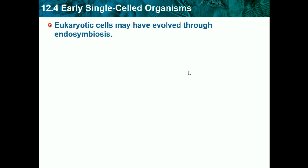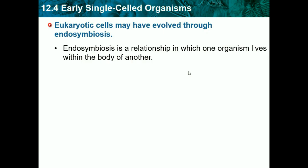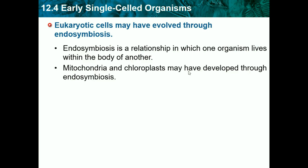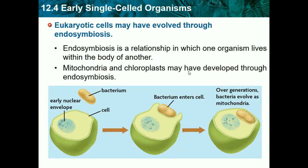Eukaryotic cells may have evolved through endosymbiosis — a relationship in which one organism lived within the body of another. Mitochondria and chloroplasts may have developed through endosymbiosis. First, a cell with an early nuclear envelope is starting to become eukaryotic. A bacteria comes and lives inside of it, and over generations that bacteria evolved to become a mitochondria. This also happened with chloroplasts as well.